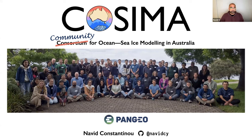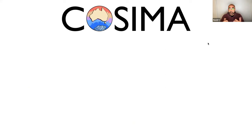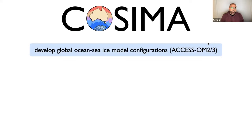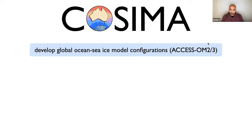So what do we do within COSIMA? We develop global ocean CI's model configurations. Perhaps you've heard of the ACCESS ocean model or the ACCESS climate model. We are developing essentially the ocean component of the ACCESS climate model.